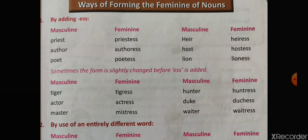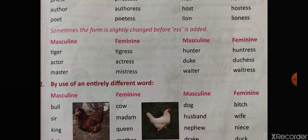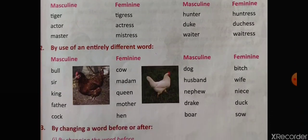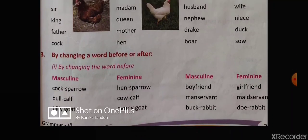Hunter becomes huntress, actor becomes actress, duke becomes duchess, master becomes mistress, and waiter becomes waitress. The second rule is by using an entirely different word. For example, boy becomes girl, sir becomes madam, king becomes queen, father becomes mother, cock becomes hen, dog becomes bitch, husband becomes wife, nephew becomes niece, drake becomes duck.